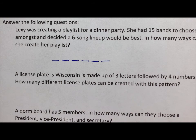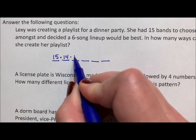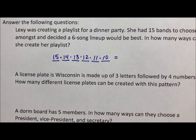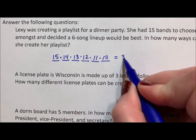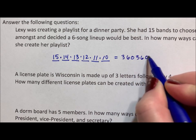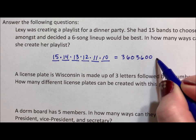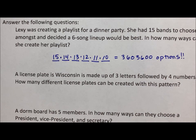For the first choice, she's looking at all her options. There are 15 choices for her first, 14 for her second, 13, 12, 11, then 10. If we multiply 15 times 14 times 13 times 12 times 11 times 10 with the fundamental counting principle, we find out that in the end she had 3,603,600 ways to set up her band list. That's a lot of ways of setting this up.